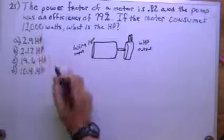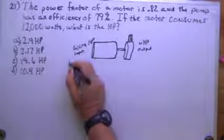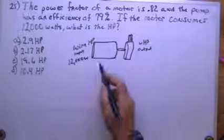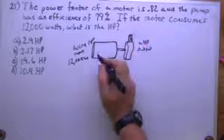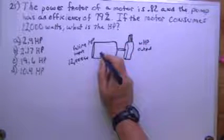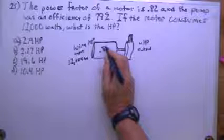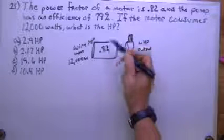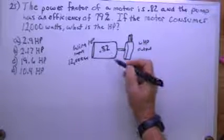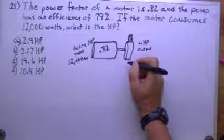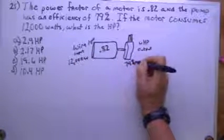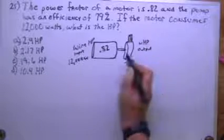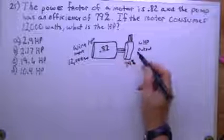So the input is 12,000 watts. The motor has a power factor of .82, which basically means for every watt, horsepower, or unit of power you put in, you get 82% out. The motor has an efficiency of 79%, so you'll basically lose 21% of whatever you put into the motor.